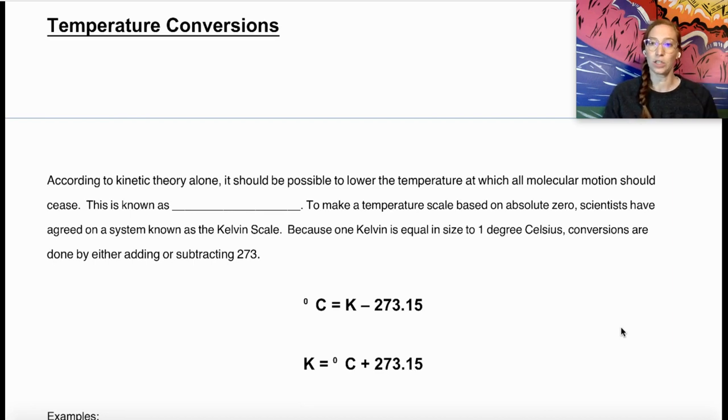We've talked about kinetic energy and motion of particles, and that relates directly to temperature and temperature conversion. According to the kinetic theory, it should be possible to lower the temperature of a substance to a point in which all molecular motion ceases. The particles stop moving completely. This temperature is known as absolute zero. We're talking like the coldest temperature that theoretically could be reached.